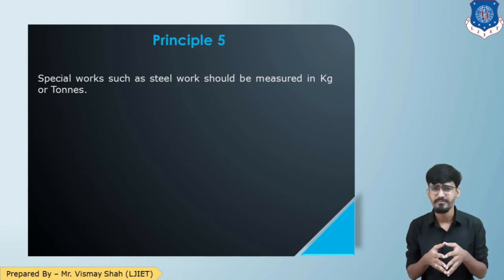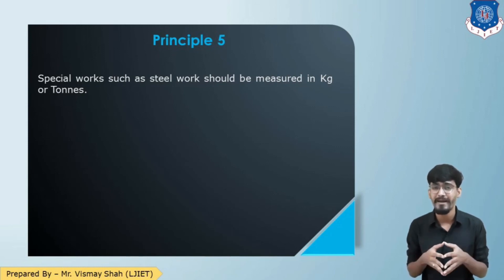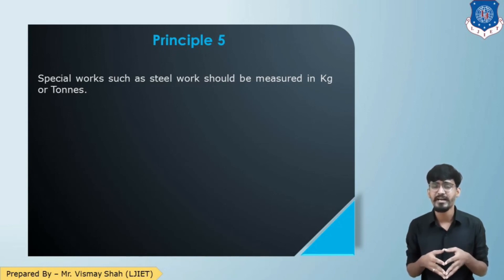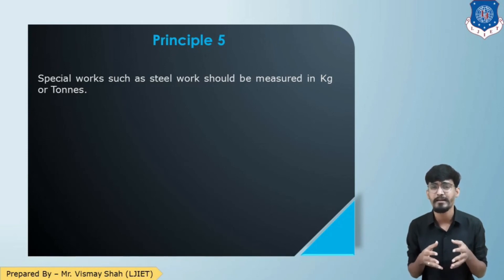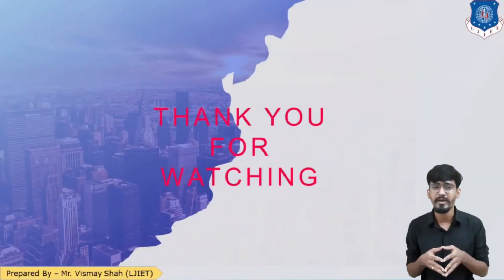So in this session we have studied the IS code used for the method of measurement — IS 1200 parts 1 to 28 — introduction to mode of measurement, the purpose and importance of standardized measurement, the general rules of measurement, and the principles of unit items. In the next session we will study the rules of measurement and deduction criteria for different items of work such as excavation, concrete, plaster, and brickwork, going into the detail of each. Thank you.